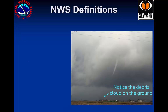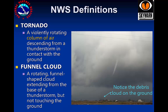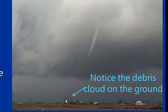A tornado is a violently rotating column of air descending from a thunderstorm in contact with the ground. A funnel cloud is a rotating funnel-shaped cloud extending from the base of a thunderstorm, but not touching the ground. Note that the visible condensation cloud doesn't always touch the ground while the winds may. This photo shows swirling debris on the ground with a visible funnel well above — the swirling debris confirms this is a tornado. Always look below the funnel to see if there is contact with the ground.